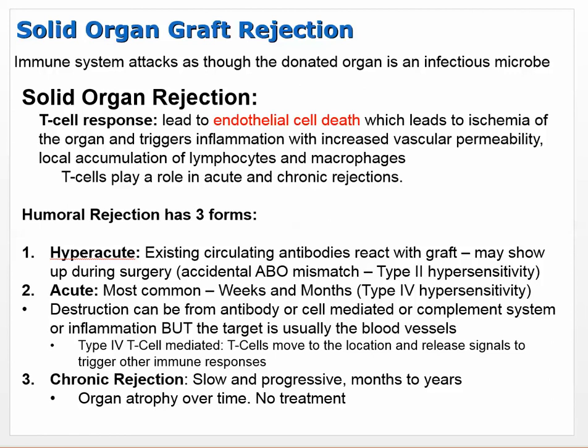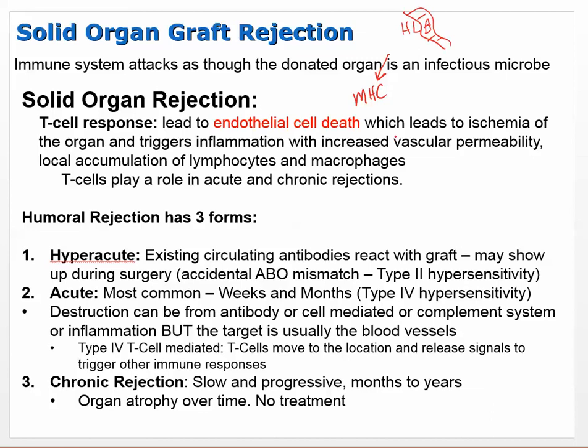Moving on to solid organ graft rejection. The immune system attacks the donated organ as though it's an infectious microbe. MHC (major histocompatibility complex) protein is made by a gene called HLA (human leukocyte antigen) - MHC and HLA can be used interchangeably. The closer those MHC molecules are genetically between donor and recipient, the higher the chance that the organ donation will be successful.